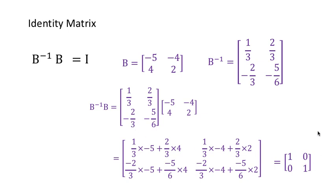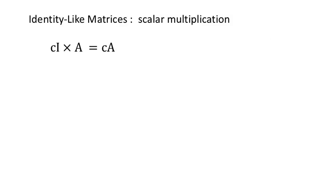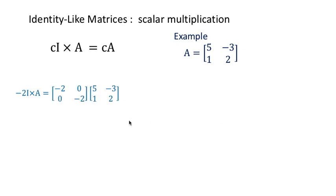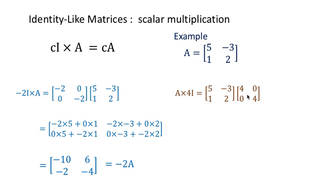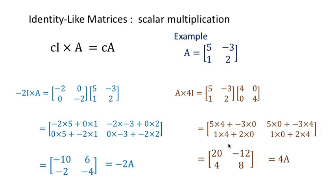There are some matrices that are like inverses, and all they do is scale and multiply. For example, negative 2I is negative 2, 0, 0, negative 2. Times it by a matrix, you get a new matrix where everything's just doubled — so it's just negative 2A, doubled and negative. Similarly, A times 4I — where 4I is 4, 0, 0, 4 — means all the elements are just multiplied by 4. As long as you see a number in the leading diagonal and zeros elsewhere, it's just the same as multiplying by a scalar.